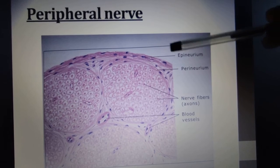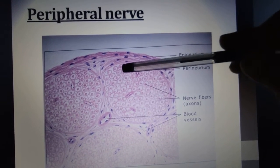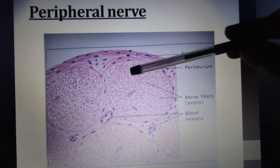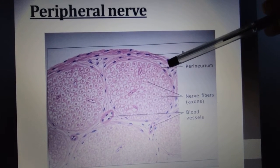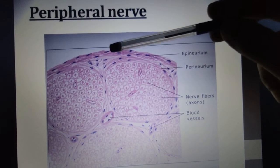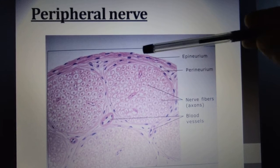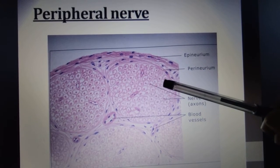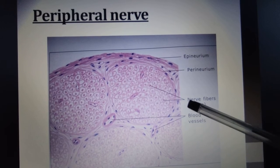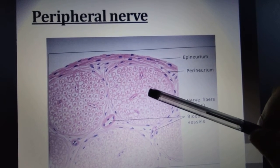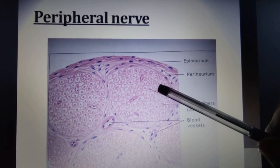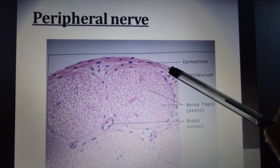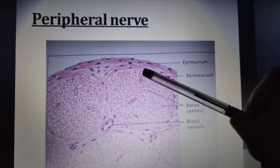In the diagram you can see the perineurium surrounding a fasciculus, the epineurium surrounding the peripheral nerve, and the endoneurium around each individual axon nerve fiber. The connective tissue around each axon is endoneurium, around a fasciculus is perineurium, and around the peripheral nerve is epineurium.